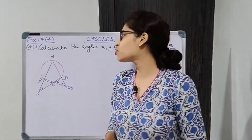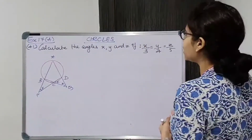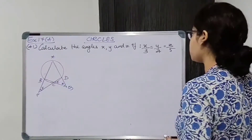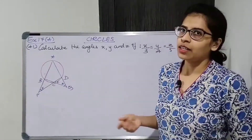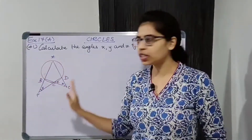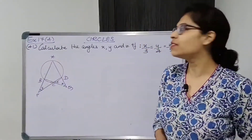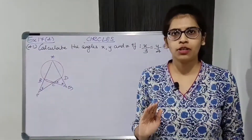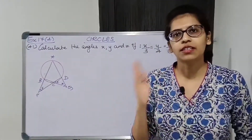Starting with question number 41: calculate the angles x, y and z if x upon 3 is equal to y upon 4 is equal to z upon 5. We have to find x, y and z and we are not given the measures of any of the angles. The only information given is x upon 3 = y upon 4 = z upon 5. Let us write down the given and to-find part and then start with the solution.